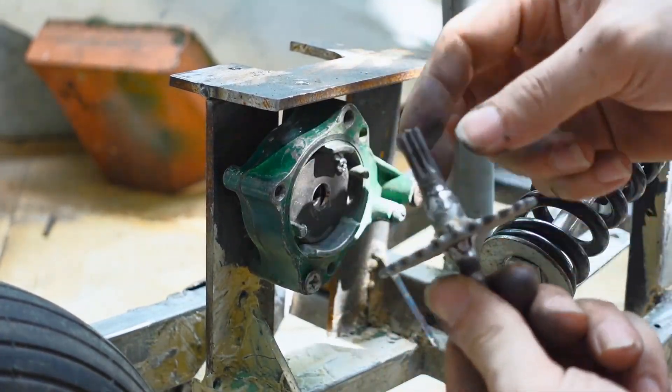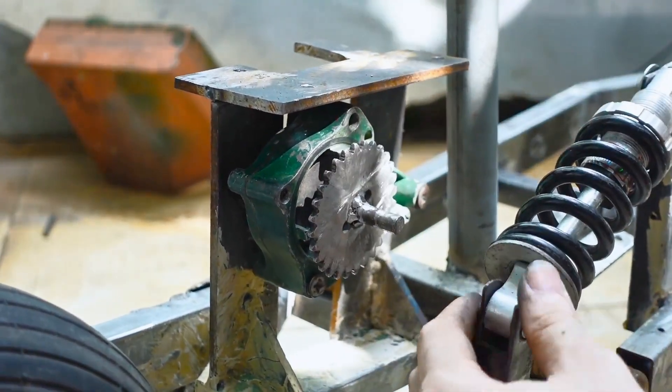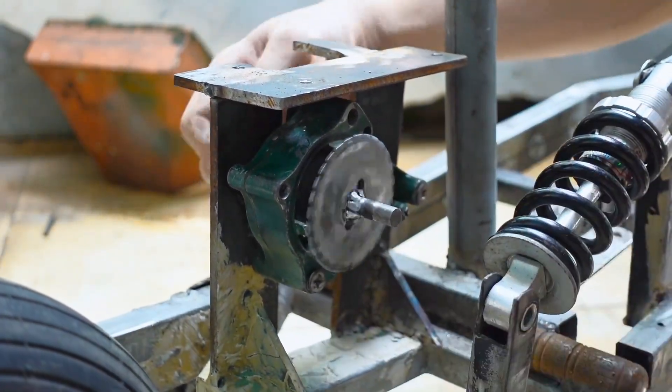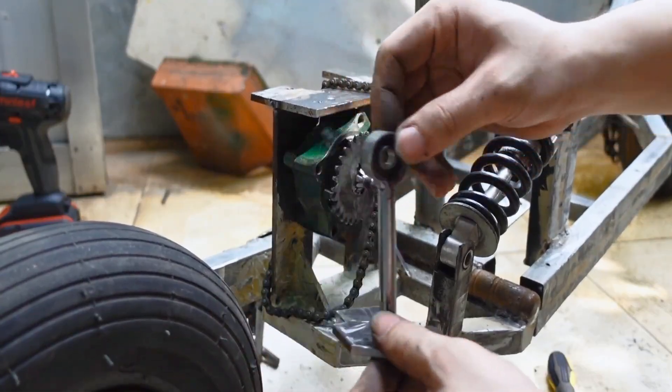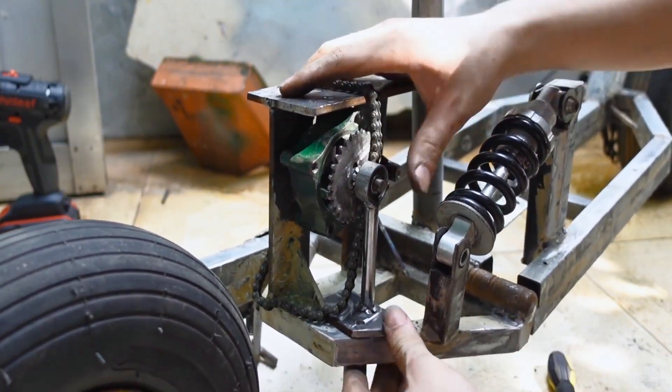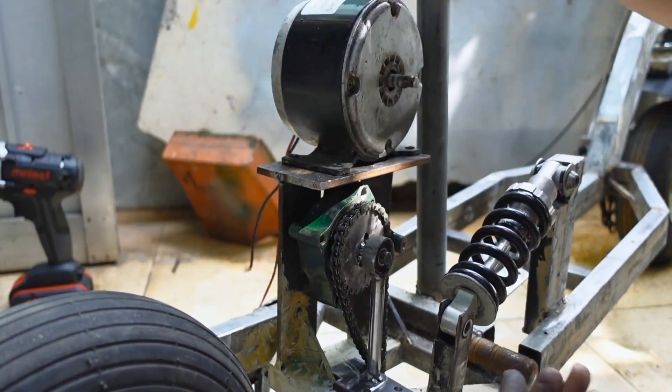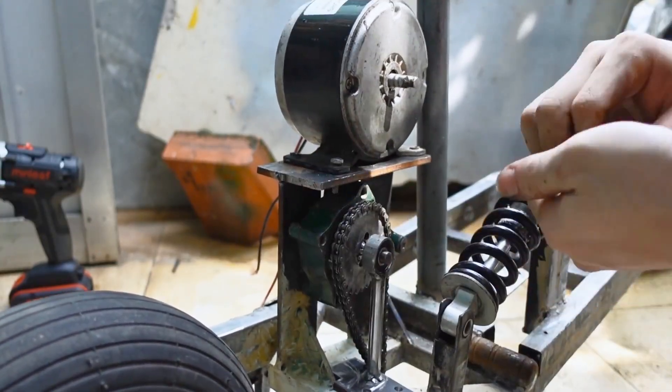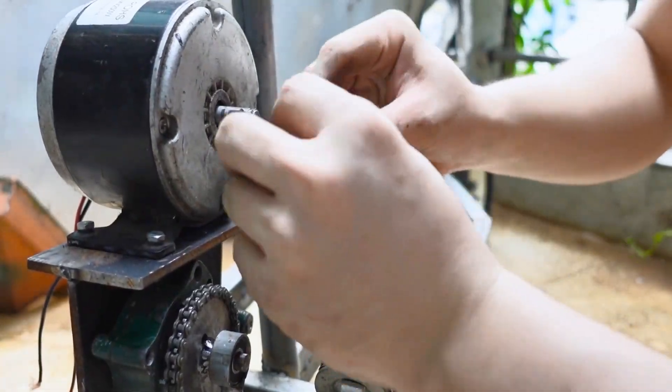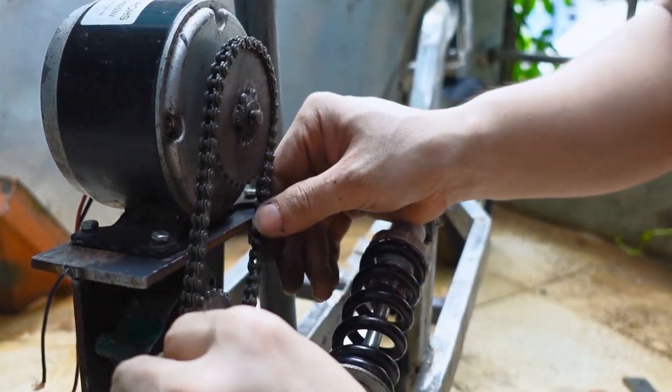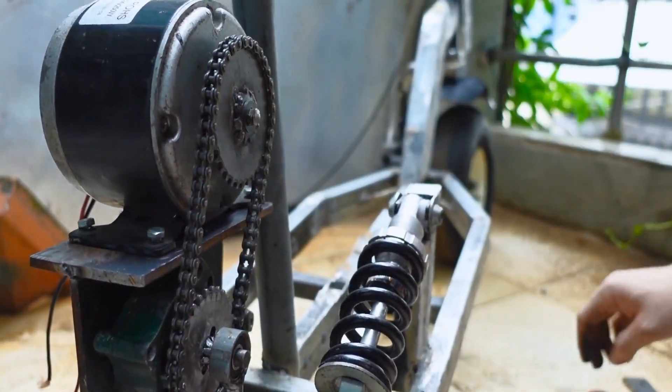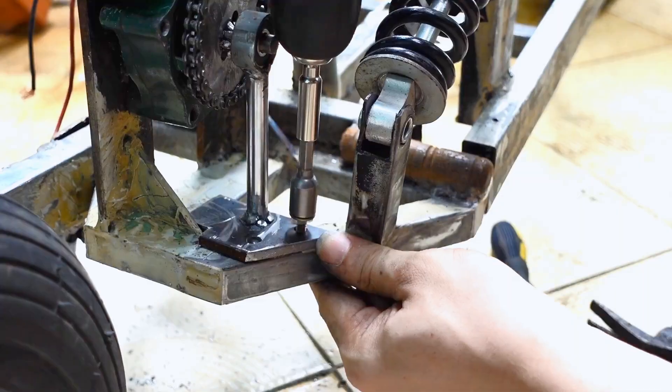A chain drive system transfers power from one sprocket, the driver, to another, the driven. By using a larger driven sprocket or a smaller driver sprocket, I could reduce output speed (RPM) and increase torque (rotational force). The gear ratio formula is simple: gear ratio equals teeth on driven sprocket divided by teeth on driver sprocket. For example, driver sprocket (motor side) 10 teeth, driven sprocket (wheel side) 50 teeth. Gear ratio equals 50 divided by 10 equals 5 to 1. This means the wheel spins 5 times slower but with 5 times more torque.